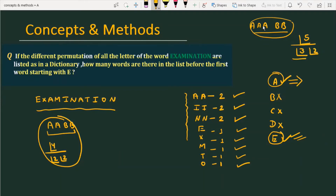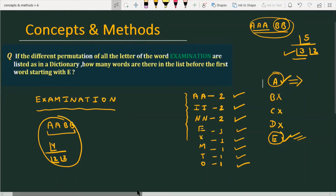We divide by factorial 3 because there are three A's, and by factorial 2 because there are two B's. With this concept, we have enough information to solve the question. Now let's start solving. According to the dictionary order, we follow A first.